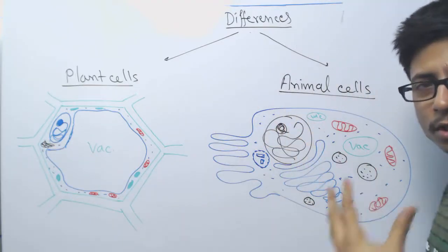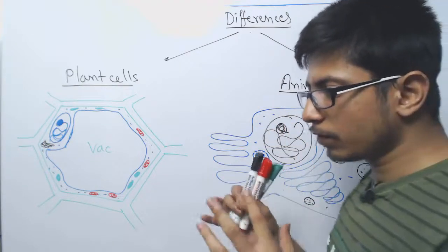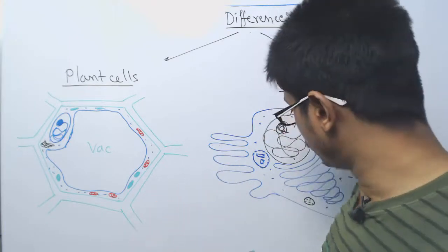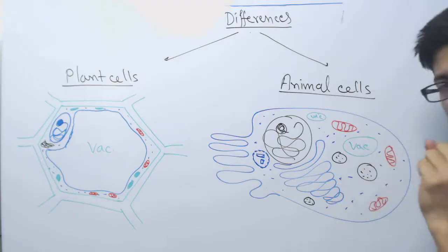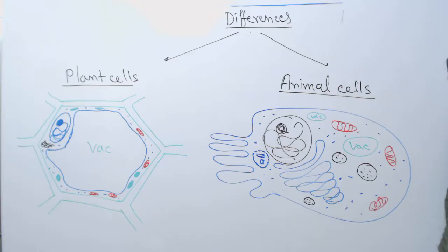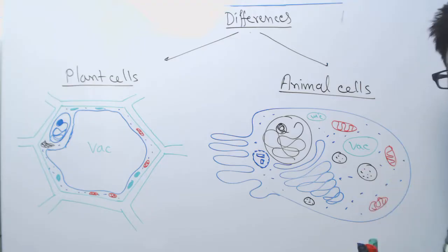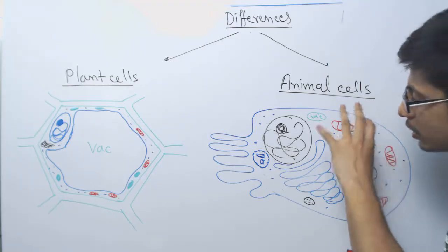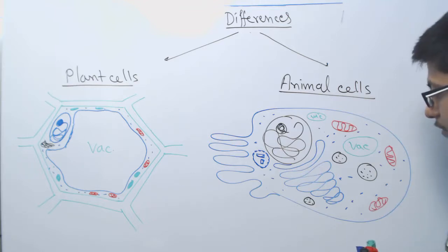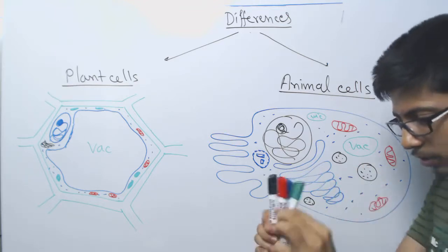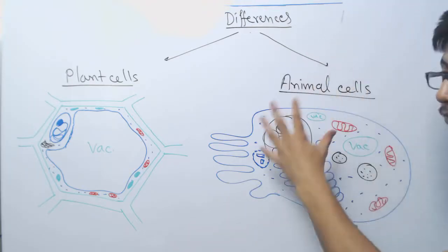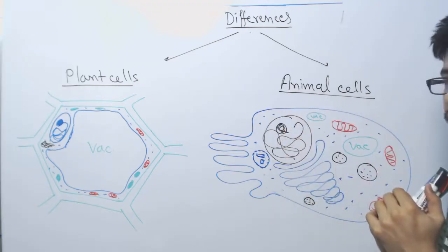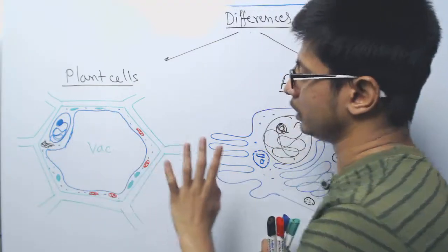Animal cells require much more cytoplasmic content because they need to produce a lot of proteins with many interactions going on inside. Animal cells do have vacuoles, but they are smaller. The next difference: plant cells have Golgi bodies and animal cells also have Golgi bodies, but animal cells additionally have lysosomes — small organelles filled with hydrolyzing enzymes, protein-digesting and fat-digesting enzymes. Lysosomes can help the cell destroy foreign materials or even trigger cell death when the cell is infected. Lysosomes are not found in plant cells.